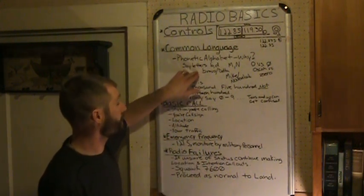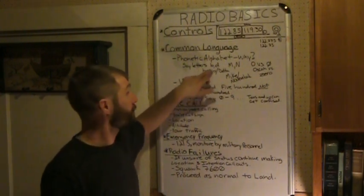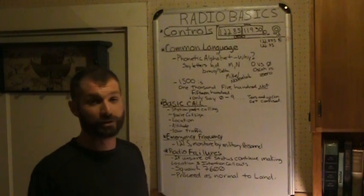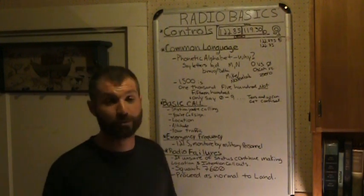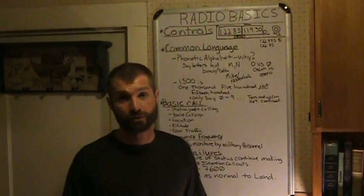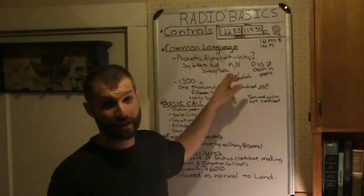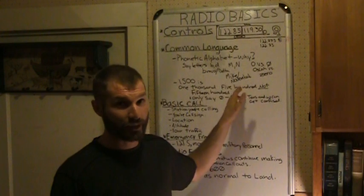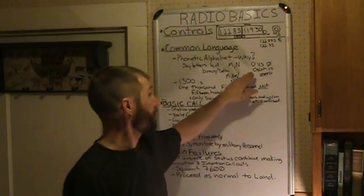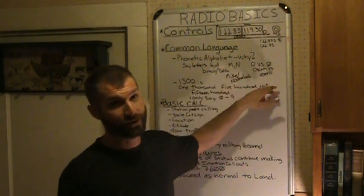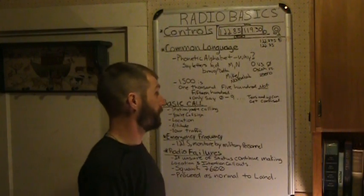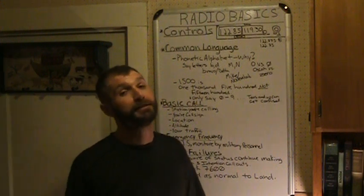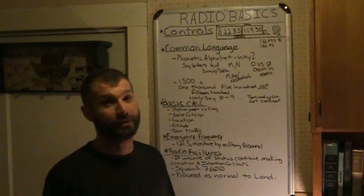There's a couple letters like B and D, Bravo and Delta. B and D, if you're just saying that over the radio, it could be either or. Same thing with M and N, Mike and November. Definite difference there: Mike, November. O versus zero, that's another one. That's why we use Oscar versus zero. Oscar doesn't sound anything like zero, so you'll never confuse the two.